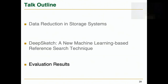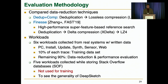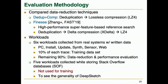Next, I will present our key evaluation results. We compared DeepSketch with two baselines: a simple combination of deduplication and lossless compression, and Finis, a state-of-the-art super feature-based reference search technique for post-deduplication data compression. We evaluated 11 workloads — six workloads collected while running different applications on real systems, and five workloads collected while storing a Stack Overflow database. We used 10% of the six traces for the training dataset but did not use the Stack Overflow workloads in training, in order to assess the generality of DeepSketch.